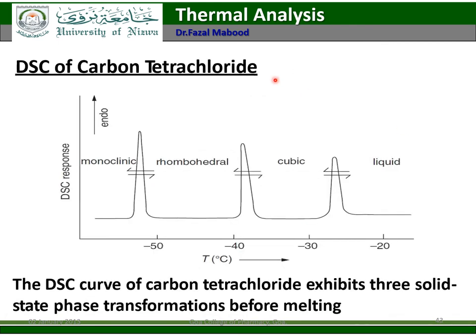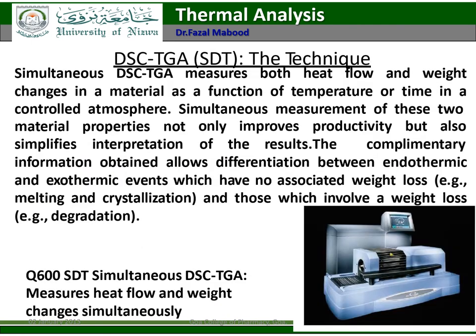DSC of carbon tetrachloride shows different phase transitions: monoclinic, rhombohedral, cubic, and liquid phases, each with a different peak shape on the DSC curve.